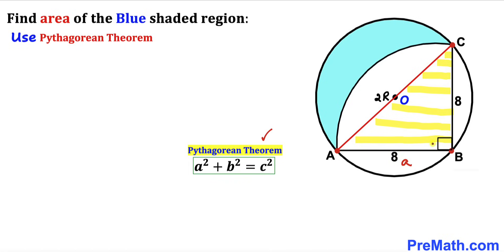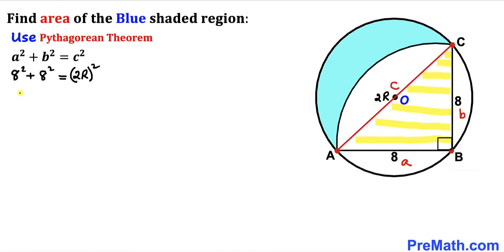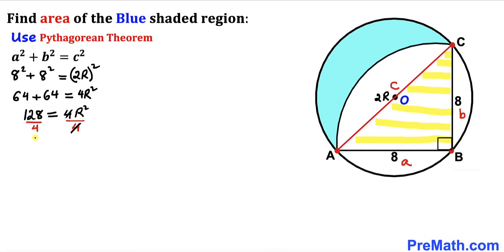Let me call the two legs A and B, and the hypotenuse C. Filling in the formula: A is 8, so 8² plus 8² equals (2R)². Simplifying: 64 plus 64 equals 4R², so 128 equals 4R². Dividing both sides by 4, R² turns out to be 32.